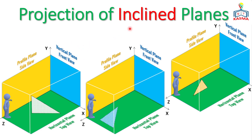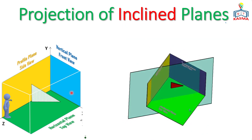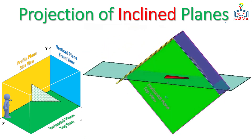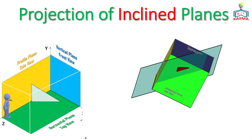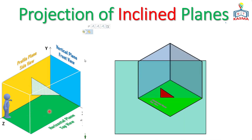In this video we'll see the projections of inclined planes. An inclined plane is a plane which is perpendicular to either of the three principal planes, but is neither perpendicular nor parallel to the remaining two planes. We have three principal planes: the vertical plane, horizontal plane, and profile plane — normally for front view, top view, and side view respectively. So if a plane is inclined, it will be perpendicular to one of these planes but not parallel or perpendicular to the other two.